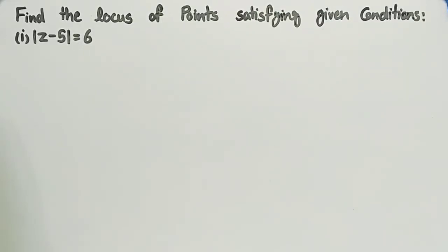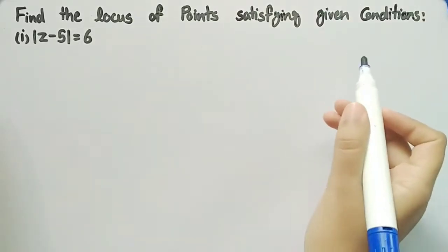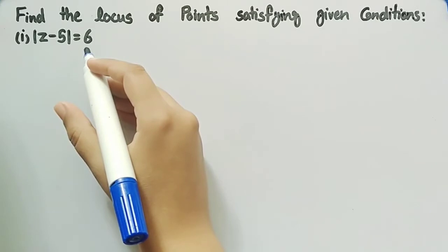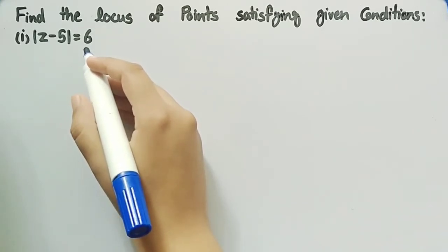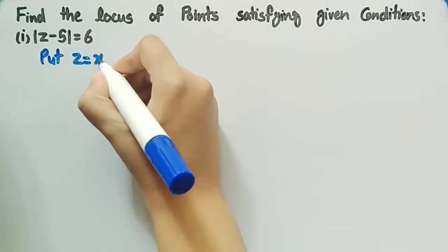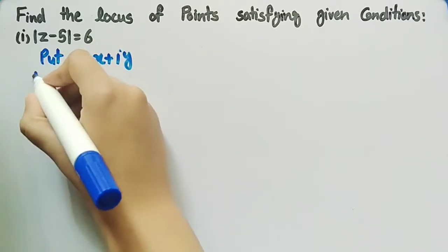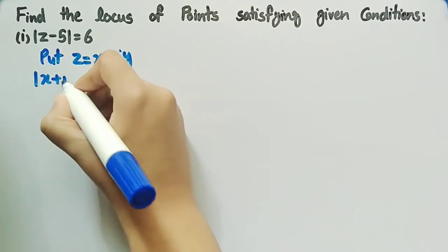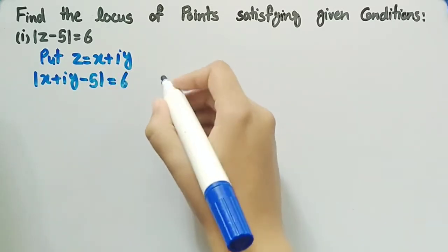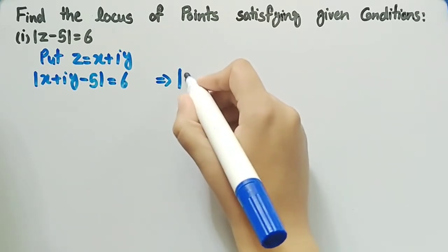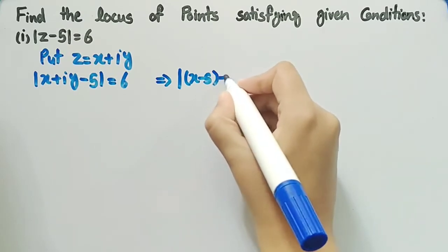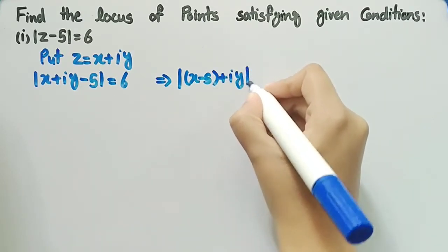In this video we will find the locus of points satisfying given conditions. The first condition is mod of z minus 5 is equal to 6. We will find the locus of points that satisfy this condition. To find it, we will put z equal to x plus iota y, and we get mod of x plus iota y minus 5 equal to 6, which we can also write as mod of x minus 5 plus iota y equal to 6.